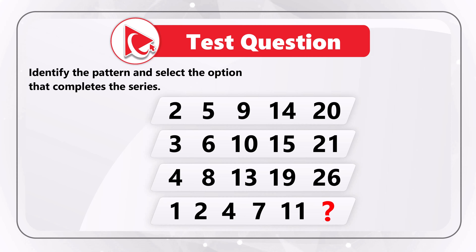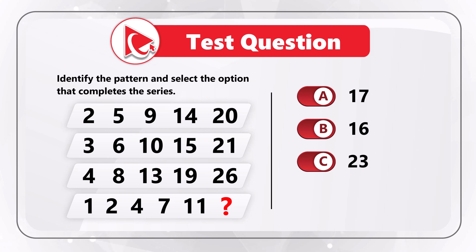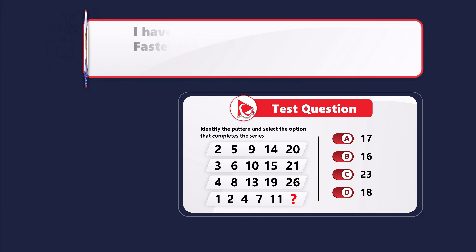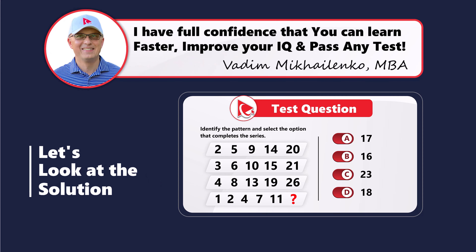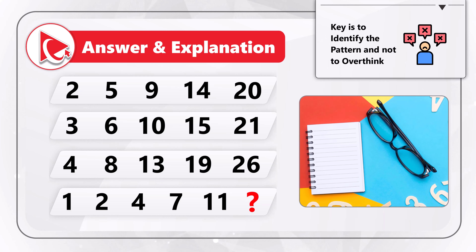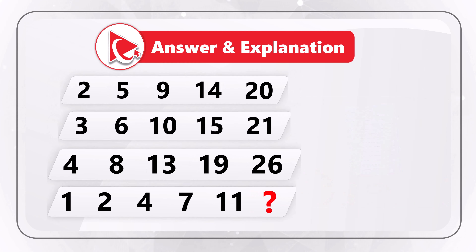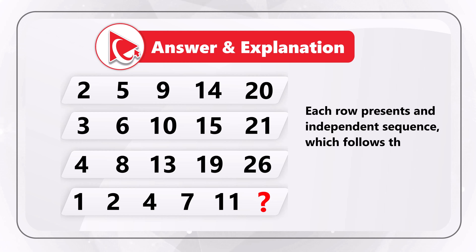The key to solving these types of challenges is to identify the pattern and not overthink it. Each row represents an independent sequence which follows the same pattern: the next number is calculated as the previous number plus an increment, and the increment increases by 1 with each subsequent number. For example, in row 1: 2 plus 3 equals 5, then 5 plus 4 equals 9, then 9 plus 5 equals 14, then 14 plus 6 equals 20.